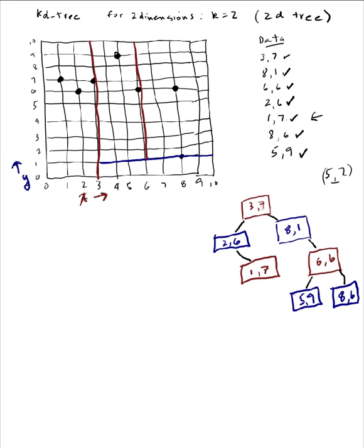My 2,6 — the 2 is less than 3, so that is on the left hand side of that space. So here's my 2,6 right here, there's my point, and this does a partition in my y space between less than 6 and greater than 6. So there's that partition right there — it's got to be blue. There's that partition right there.